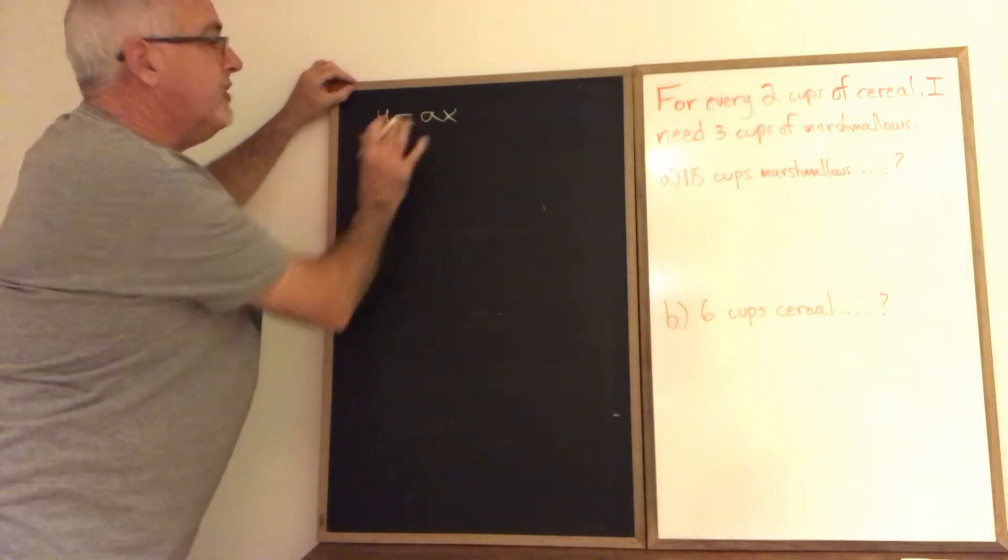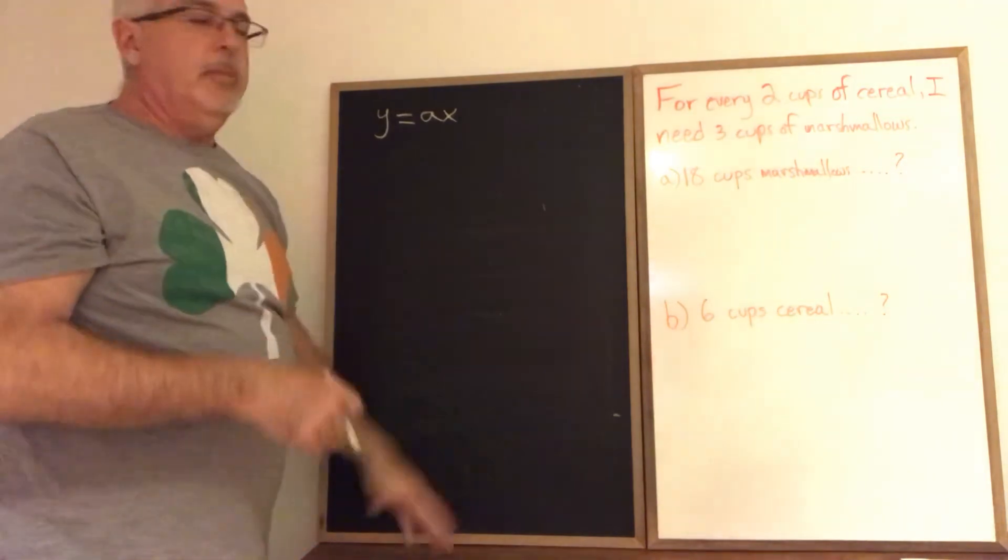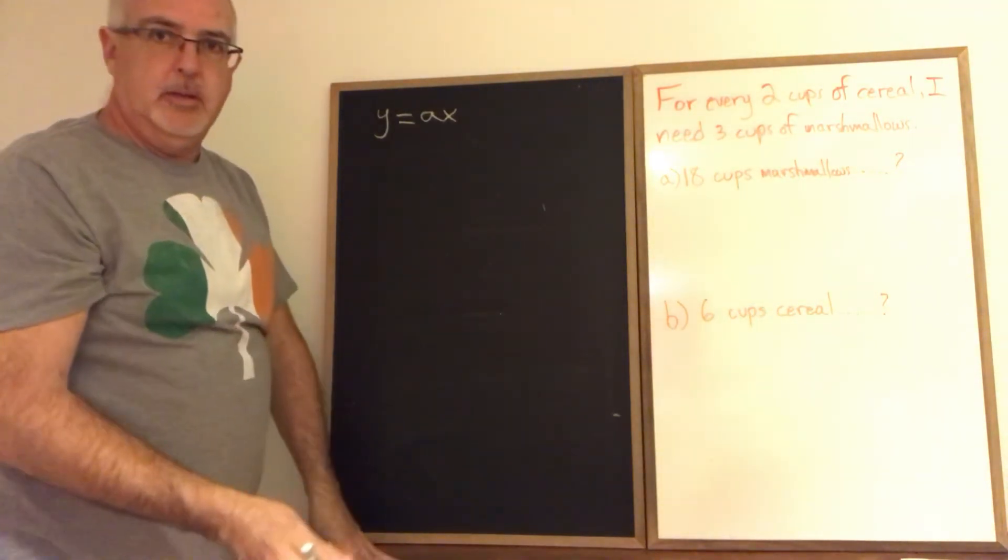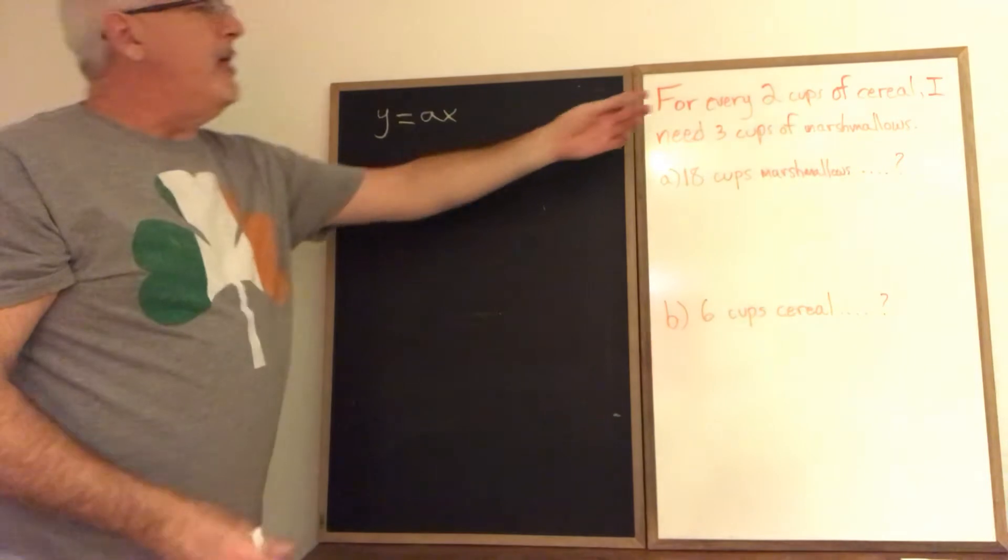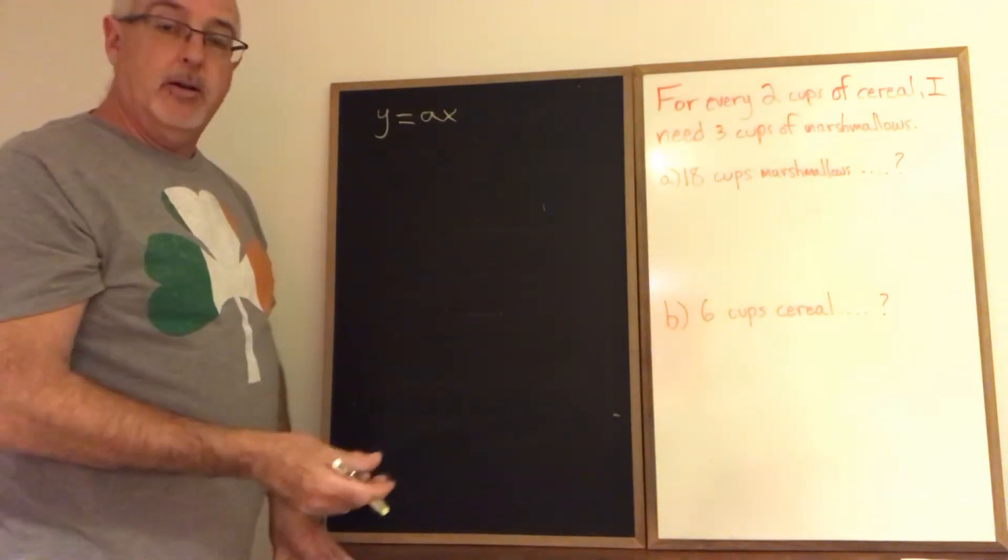But to use the algebraic model of this form, what we want is to be able to say for every one cup of cereal, how much marshmallows I need or vice versa. And we don't have that one to another number relationship given here. We have to figure it out.